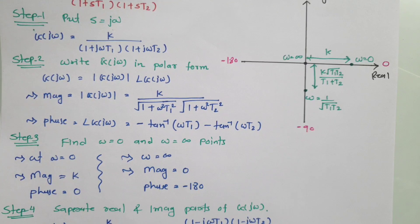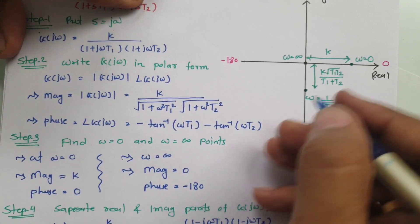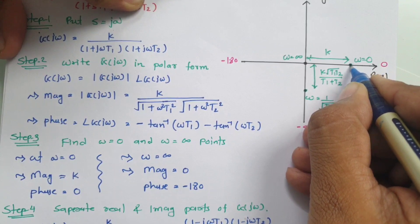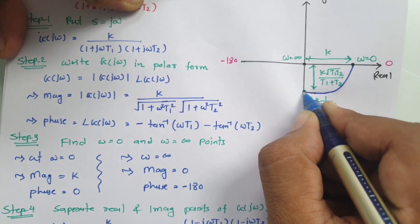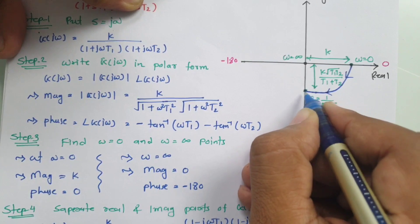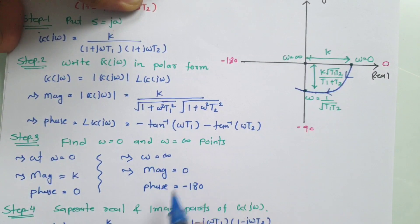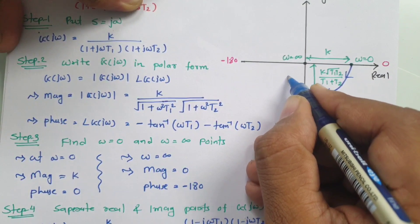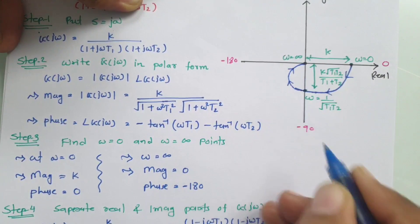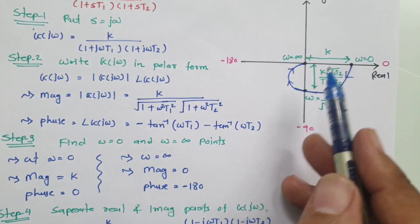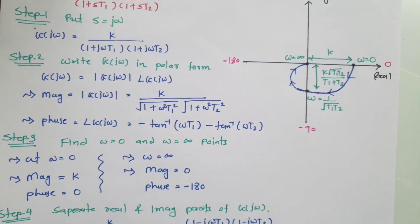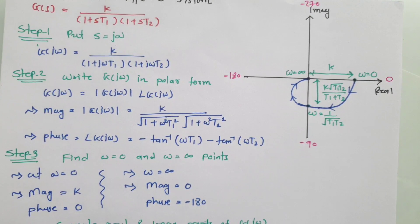These are the steps to plot the polar plot for a type 0 system. I hope you have understood this. If you have any queries, place them in the comments and I will get back to you to sort out anything required.